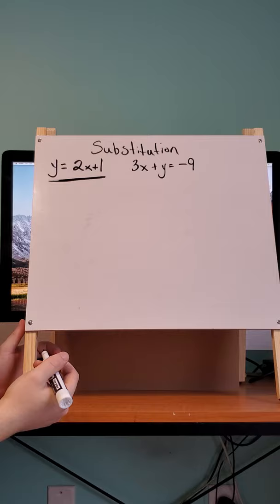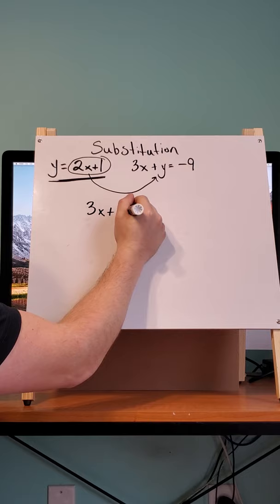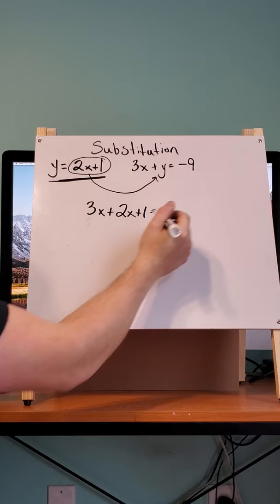So what we're going to do is plug in this part, what y equals, into the y here. So we'd rewrite it as 3x plus 2x plus 1, because we replaced y, equals negative 9.